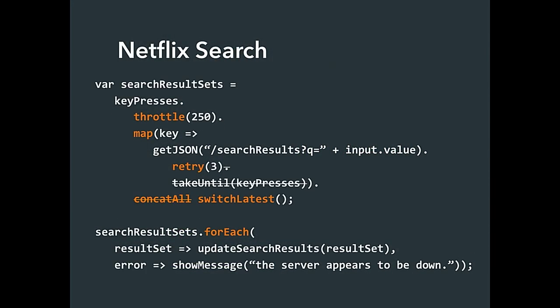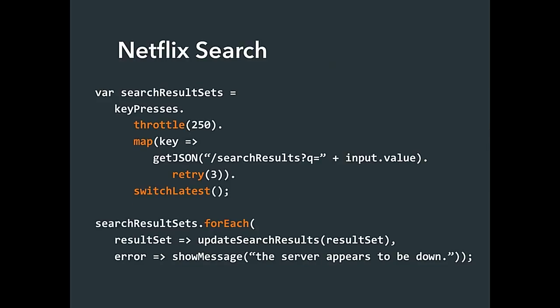In the previous example I had map, then take-until, then concatAll. We can replace take-until and concatAll with Switch Latest — because all we're doing is caring about the latest JSON request sent out by a key, and as soon as another one happens we stop listening to that observable. So we can simplify to an even shorter expression.